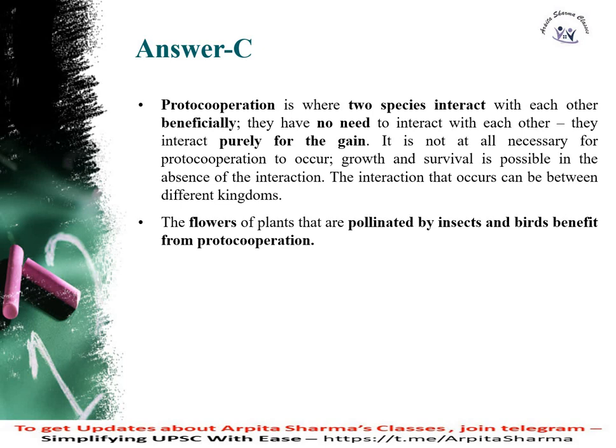The answer here is C. Protocorporation is where two species interact with each other beneficially. They are not dependent on each other — they don't need each other — but they interact because it is purely beneficial. The flowers of plants that are pollinated by insects and birds benefit from protocorporation; it is an example of protocorporation.